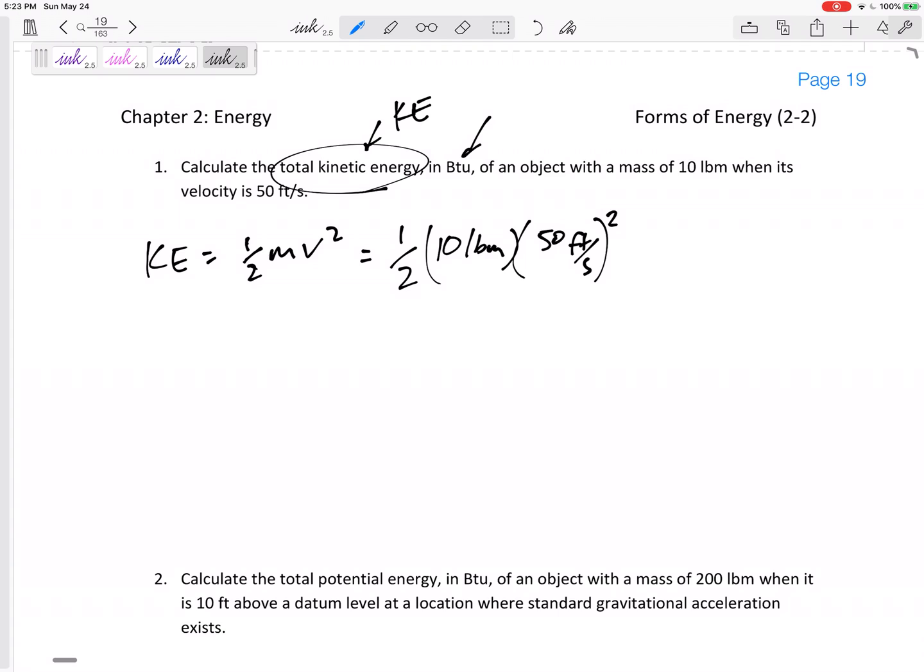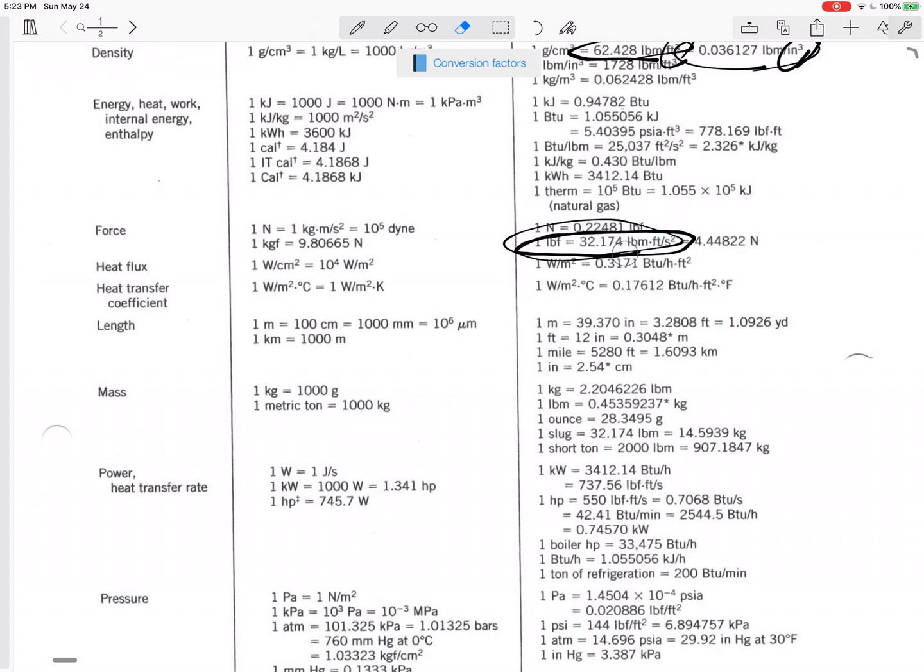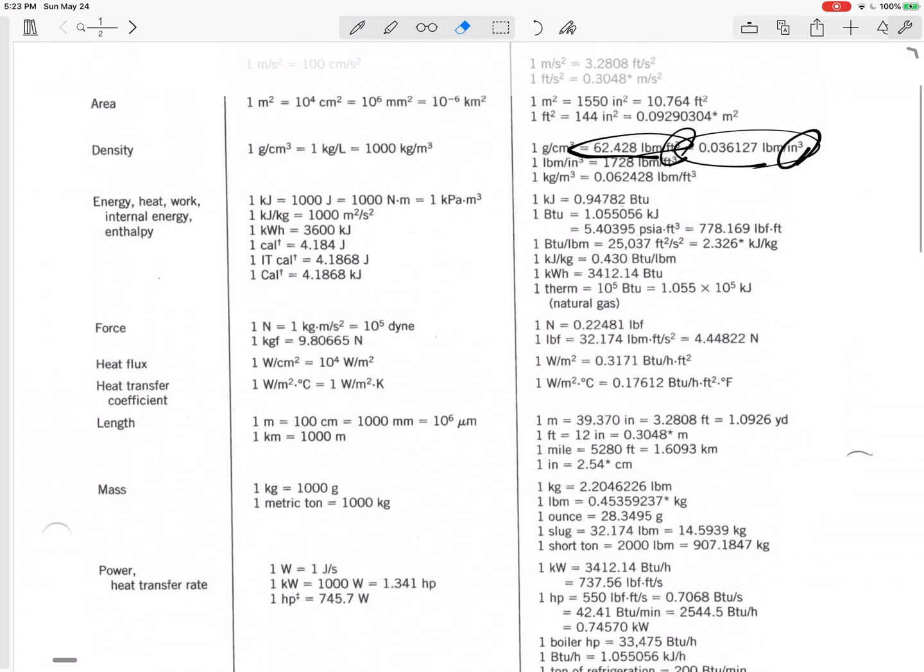I could put it in a calculator but my units would be pound mass feet squared per second squared and it's asking for BTUs. So my units right now are pound mass feet squared per second squared, not BTUs. Is there some sort of conversion factor that I could include right here in my equation to get units of BTUs?